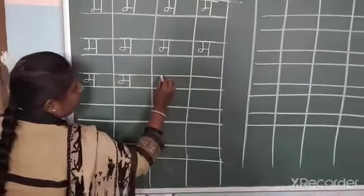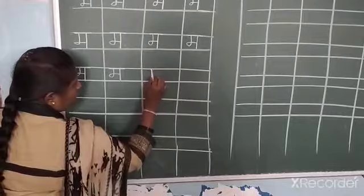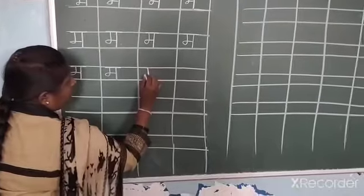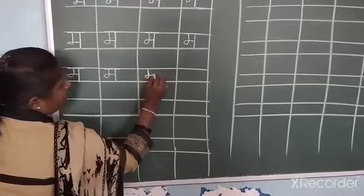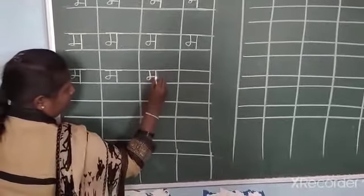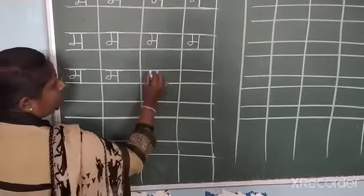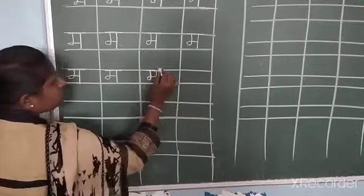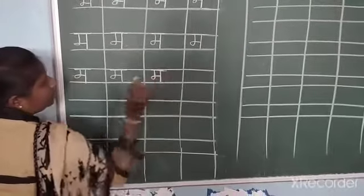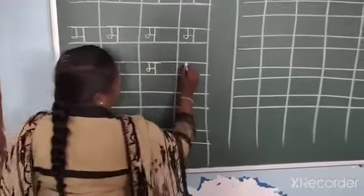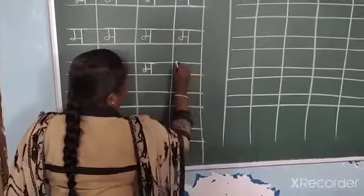How to write so that? Draw one standing line, afterwards make one knot, drag that line. Again, draw one standing line and outside one slipping line. So this is the letter म.